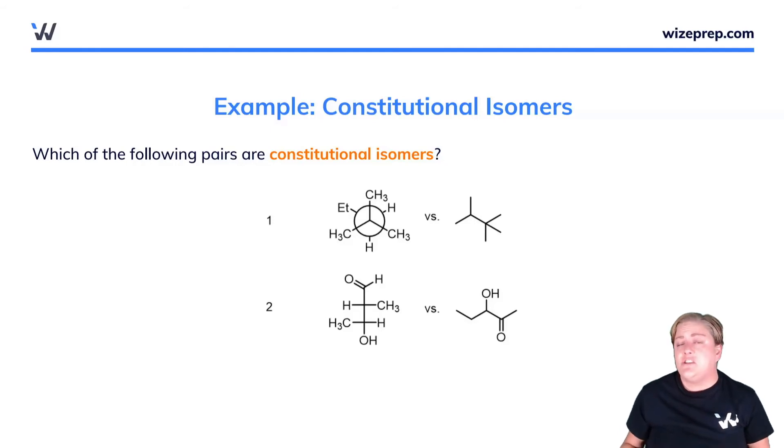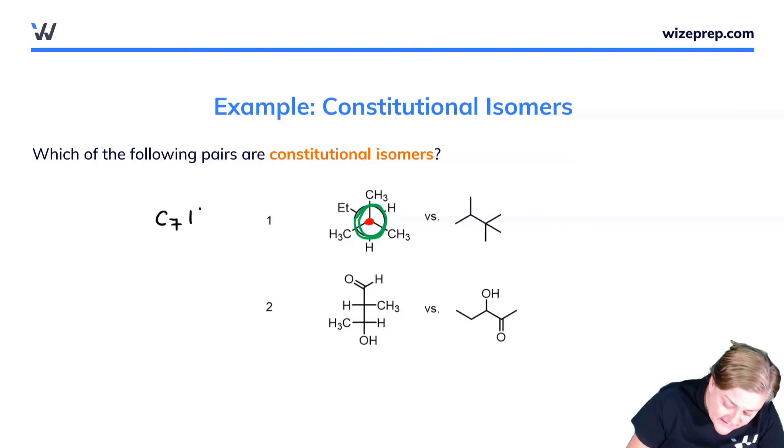We're going to start by checking the two molecules to see if they have the same molecular formula. I'm going to start with this Newman projection here. I'll highlight this carbon at the front in red and this carbon in the back in green. The carbon in red has three methyl groups. The carbon in green has two hydrogens and an ethyl group. I have a grand total of seven carbons and 16 hydrogen atoms. I come here to the other structure and label a red carbon and a green carbon. I've done this intentionally with the color coding to help keep track of everything.